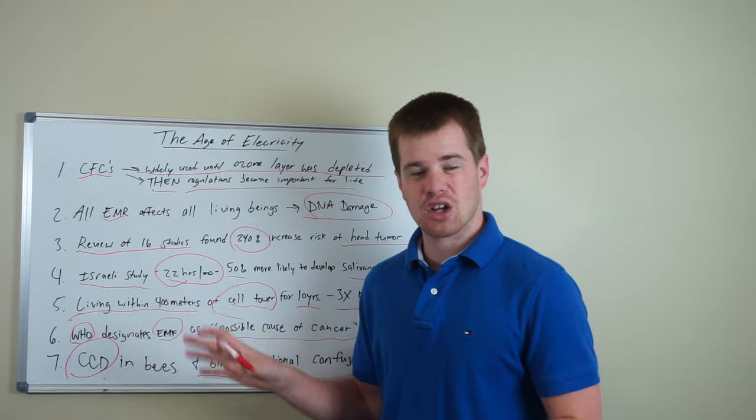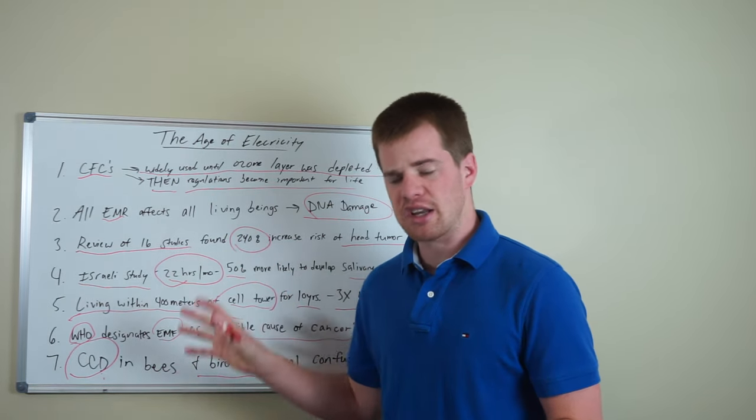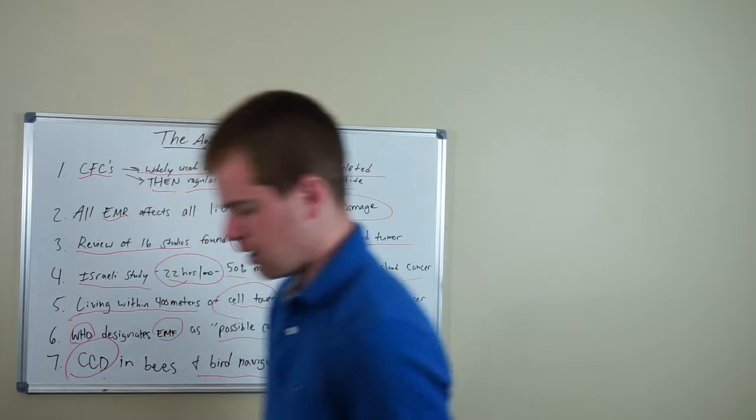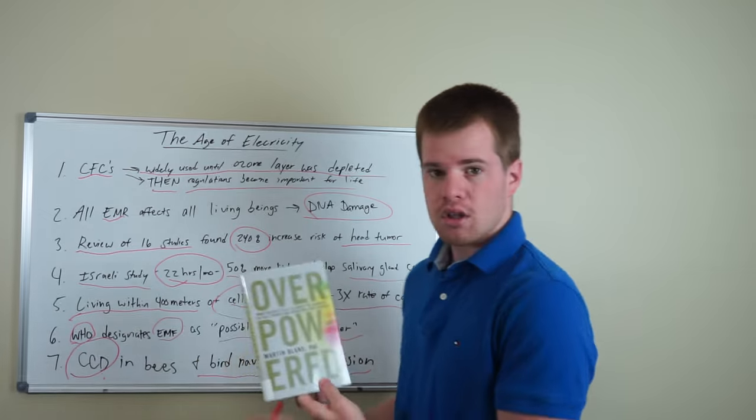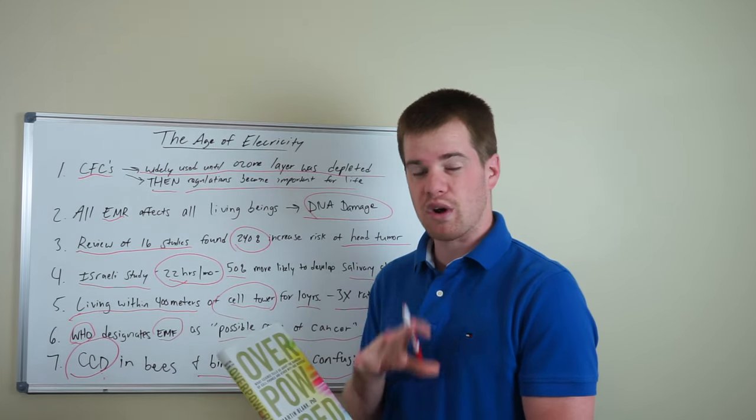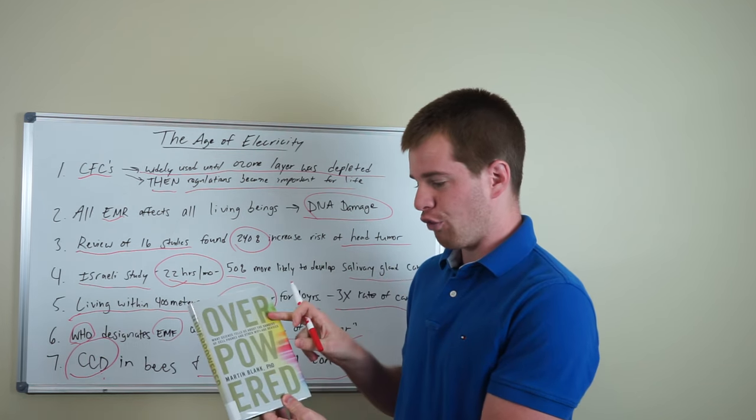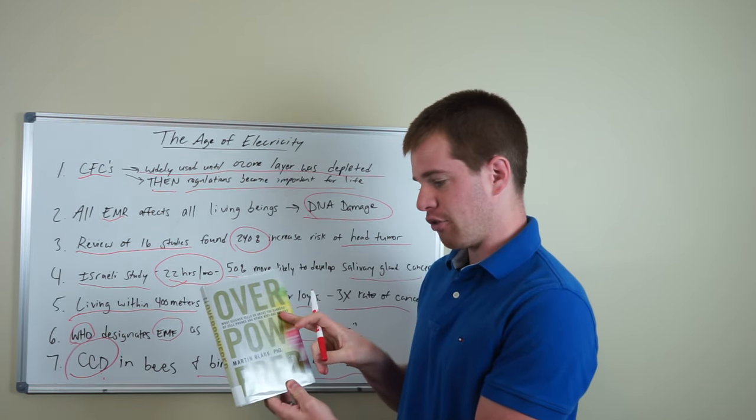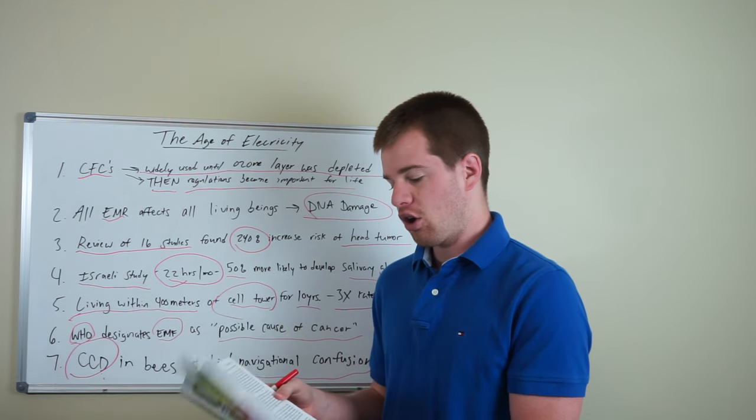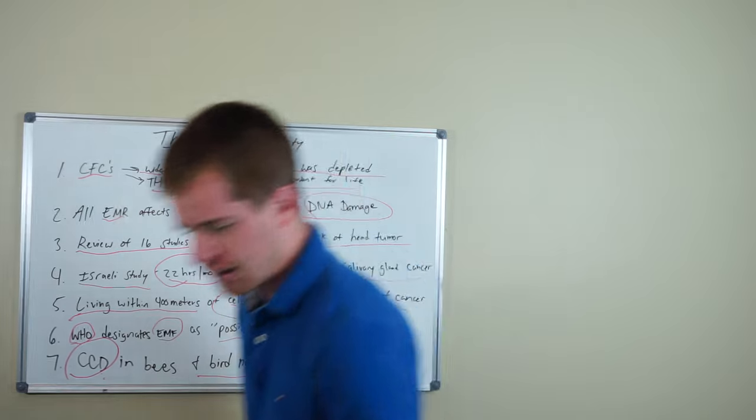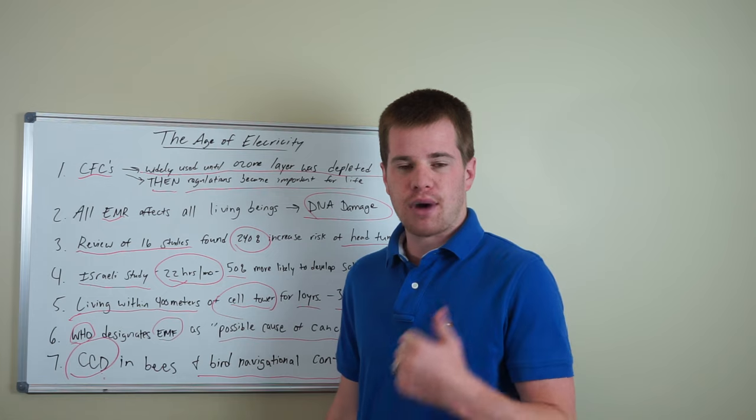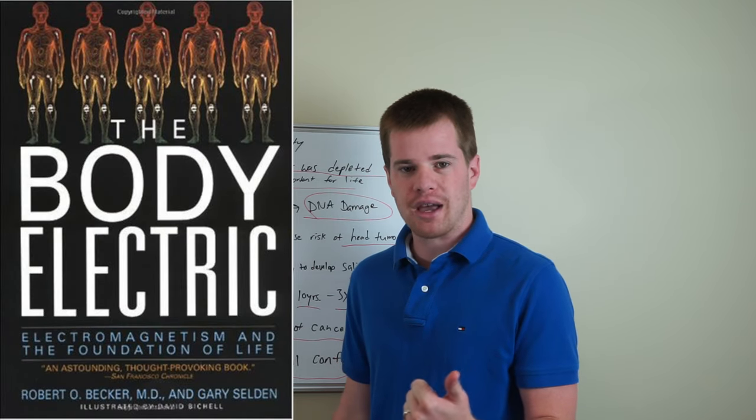These are just a couple of facts, a couple statistics, a couple different studies, but what I encourage you to do, get this book. This is one of the most important books that you can ever read in your life. Martin Blank's Overpowered, What Science Tells Us About the Dangers of Cell Phones and Other Wi-Fi Age Devices. Hundreds of peer-reviewed studies, decades of research in there. There's also The Body Electric by Robert Becker.